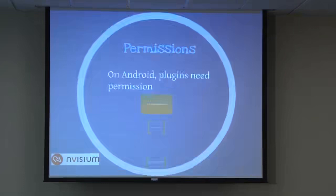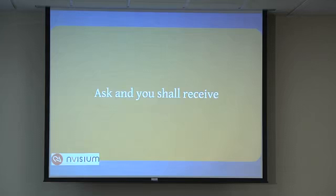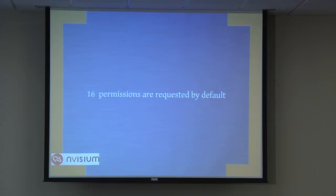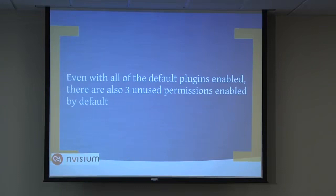PhoneGap enables 16 permissions by default in the Android manifest. Even more notable: three of them aren't actually used anywhere in the framework — receive SMS, record audio, and record video are requested but never implemented. They're just extraneous permissions being asked of the user for no reason.